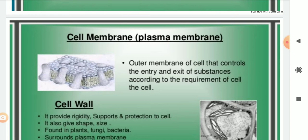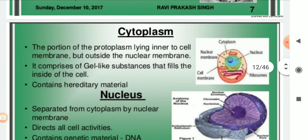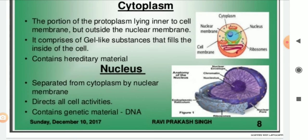Now, inside the plasma membrane, whatever is present is called the cytoplasm. Actually, before cytoplasm I should mention protoplasm. Protoplasm is made up of two parts: one is cytoplasm and the second is nucleus. Cytoplasm is a jelly-like, semi-liquid substance which makes up most of the inside of a cell. All life functions take place in the cytoplasm. 'Cyto' means hollow and 'plasma' means liquid.